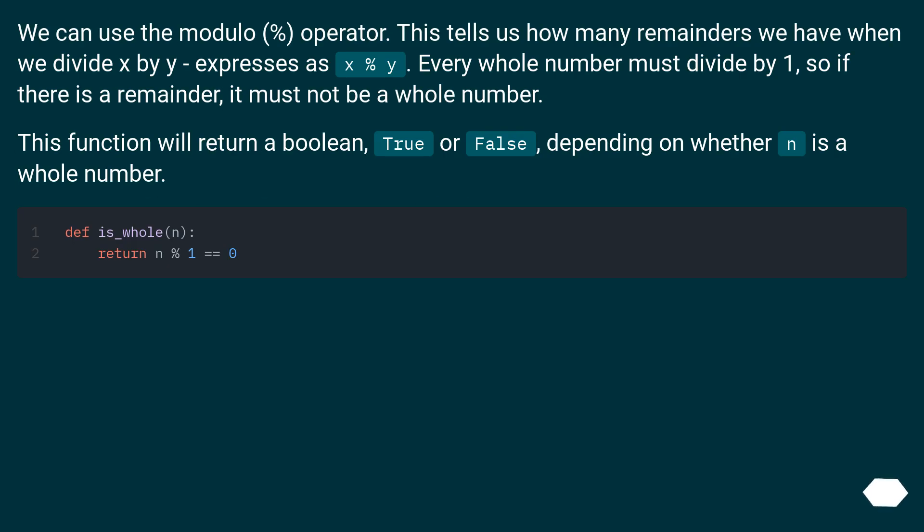We can use the modulo percent operator. This tells us how many remainders we have when we divide x by y, expressed as x percent y. Every whole number must divide by 1, so if there is a remainder, it must not be a whole number. This function will return a boolean, true or false, depending on whether N is a whole number.